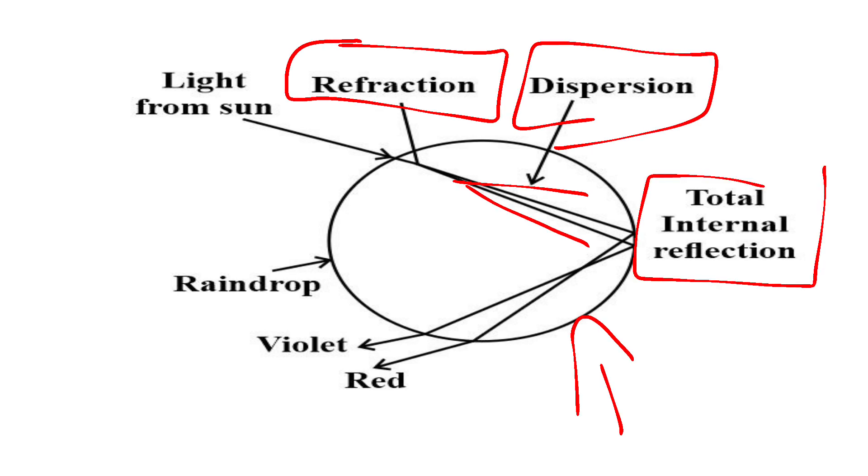And again the colors are dispersed and they get reflected as the rainbow. That's nothing but the rainbow phenomenon. Here we can see mainly three things happen: one is refraction, second one is dispersion, and third one is total internal reflection.